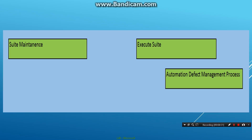In a nutshell, these are the different sets of activities which happen during the test automation process — from the requirement stage all the way to when the suite is delivered and put into maintenance. Thanks for listening.